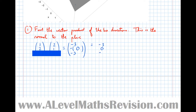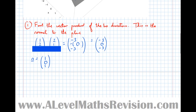We can simplify: any vector parallel to (−3, 0, −3) will work, so we divide by −3 to get n = (1, 0, 1). Note that (−3, 0, −3) would have worked too. Step two: use a point on the plane to find c.